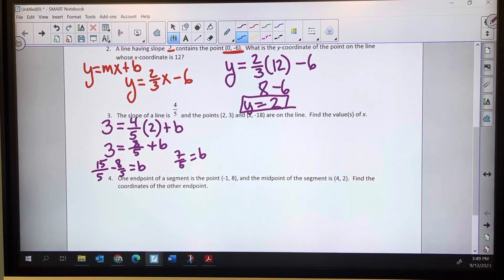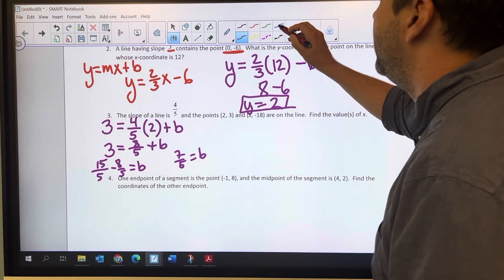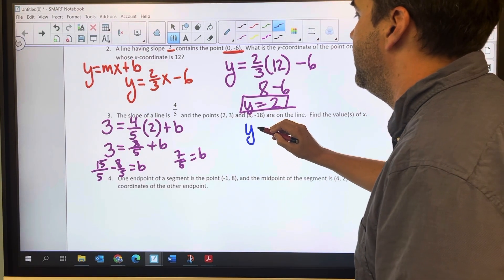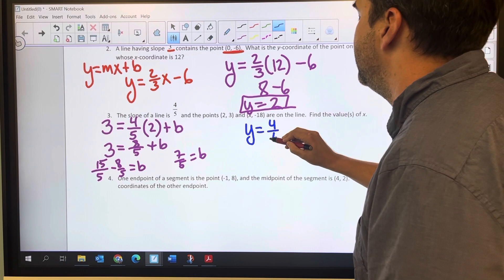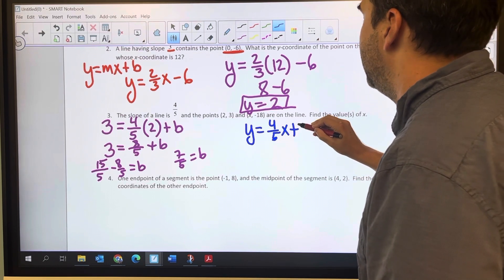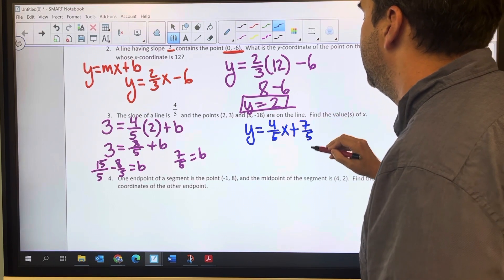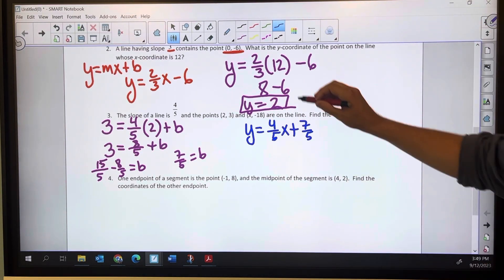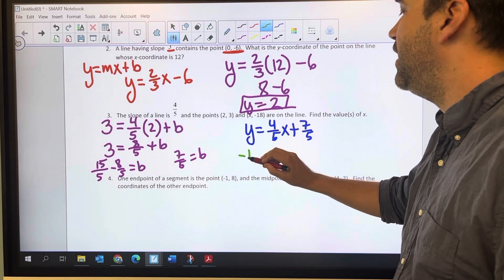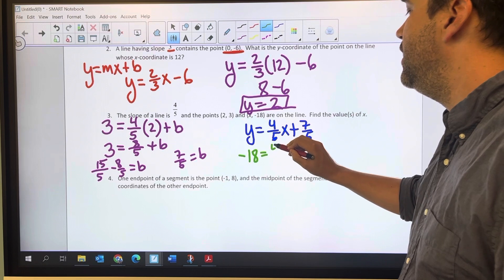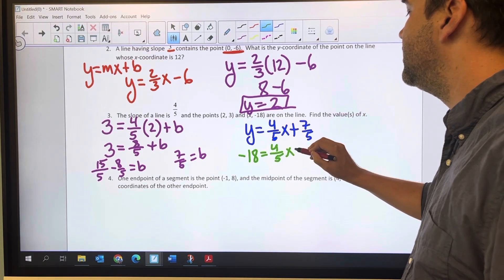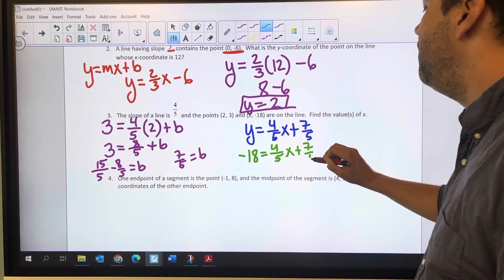For me, I make this 15 over 5 minus 8 over 5 equals b, and so I get 7 fifths equals b. I'm just going with that fraction work. Using that 7 fifths now, I can write the new equation I've got, where y equals 4 fifths x plus 7 fifths. Now I'm looking for the x when y is negative 18, so I'm going to change the y to a negative 18. Equals 4 fifths x plus 7 fifths.